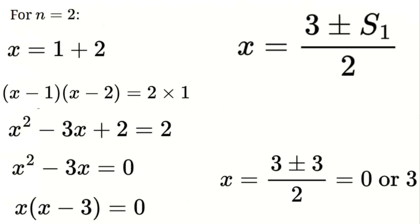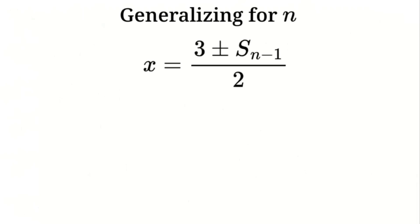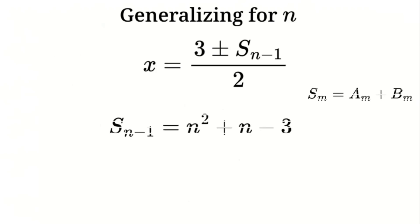From the pattern, we can generalize: x equals (3 plus or minus s(n minus 1)) divided by 2. We also found that s(n minus 1) equals n² plus n minus 3. Let's use this to find the final formula for x.